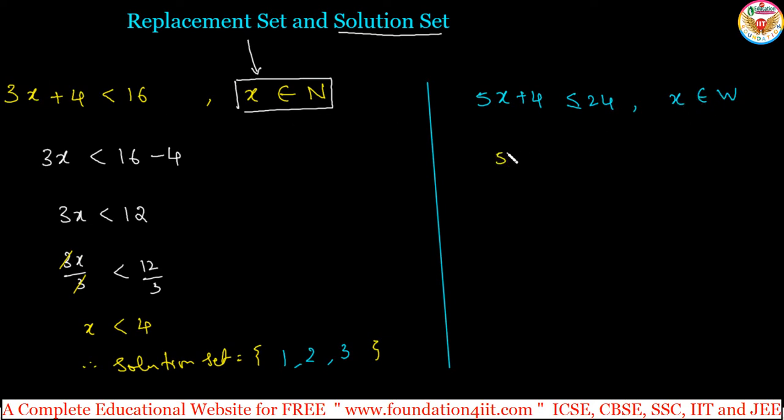You can use transposing 5x plus 4 transpose minus 4. 5x is less than or equal to 20. Divide by 5 both the sides. 5x less than or equal to 20. So, divide by 5, divide by 5 because 5 into x. So, cancel.